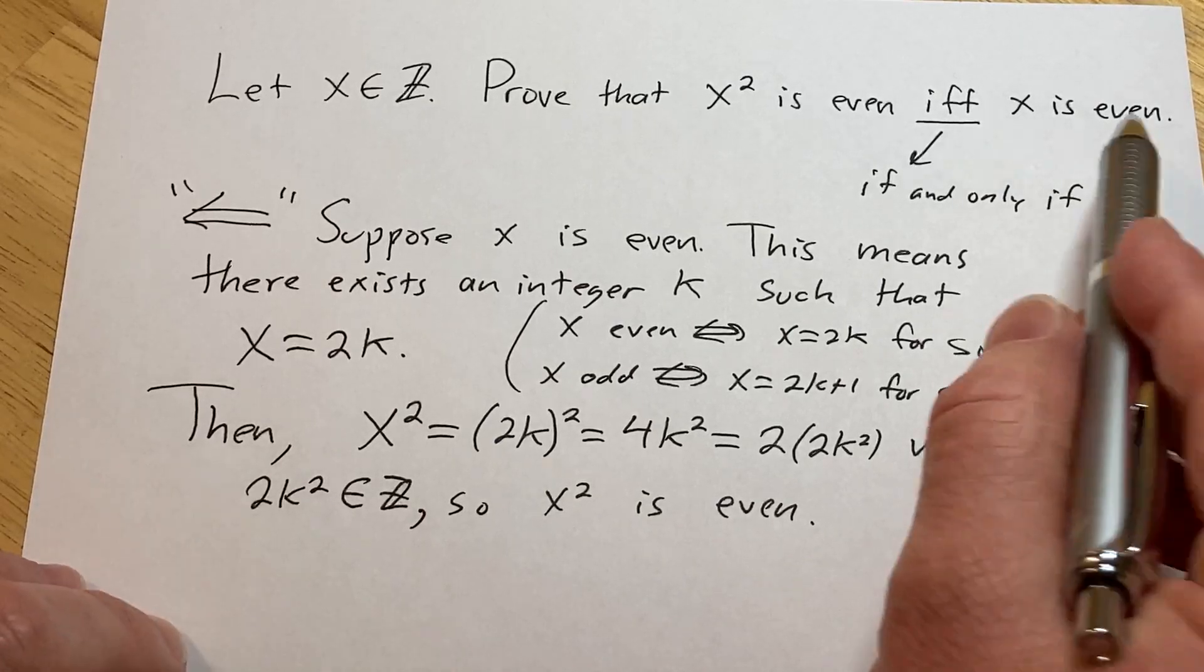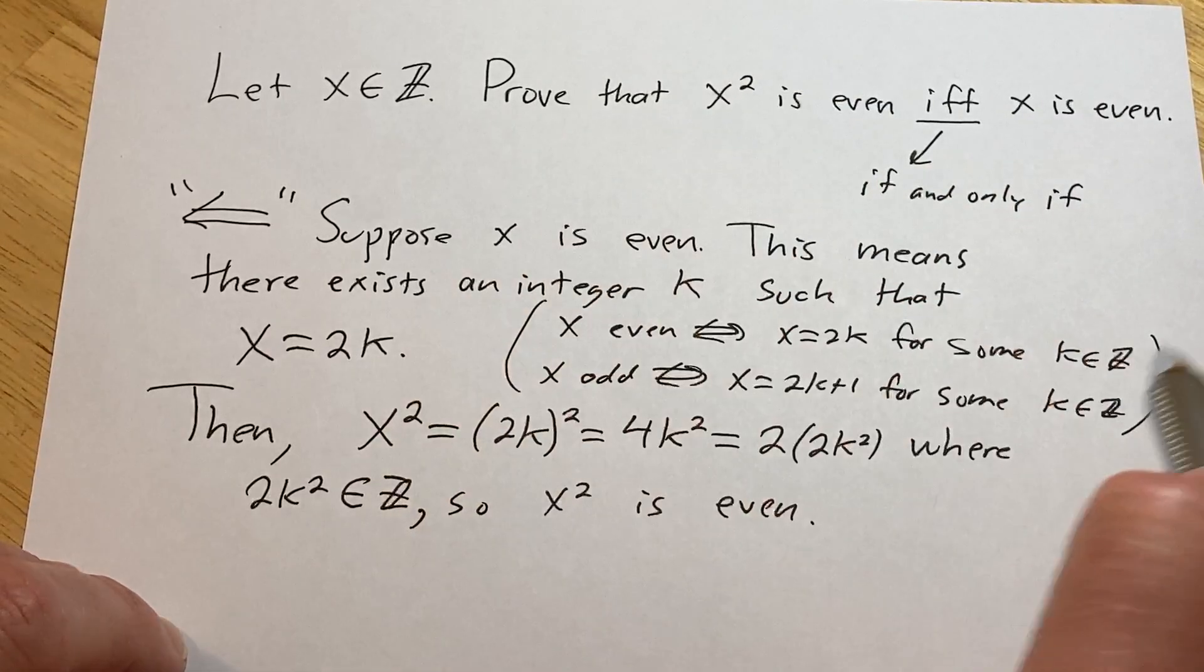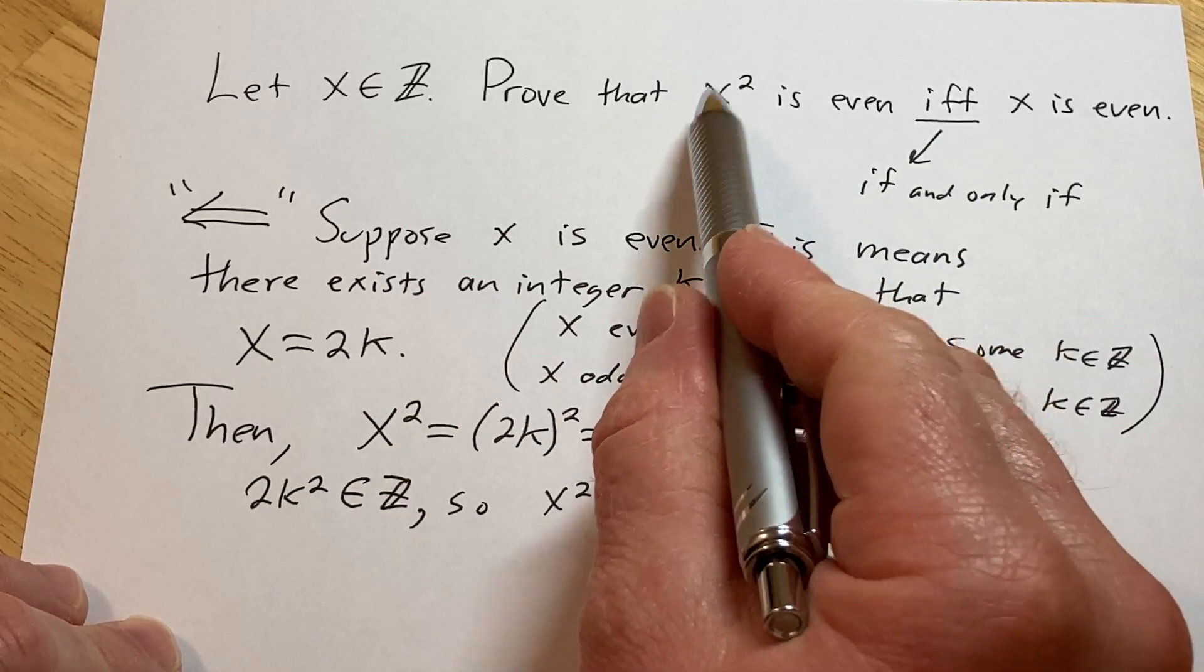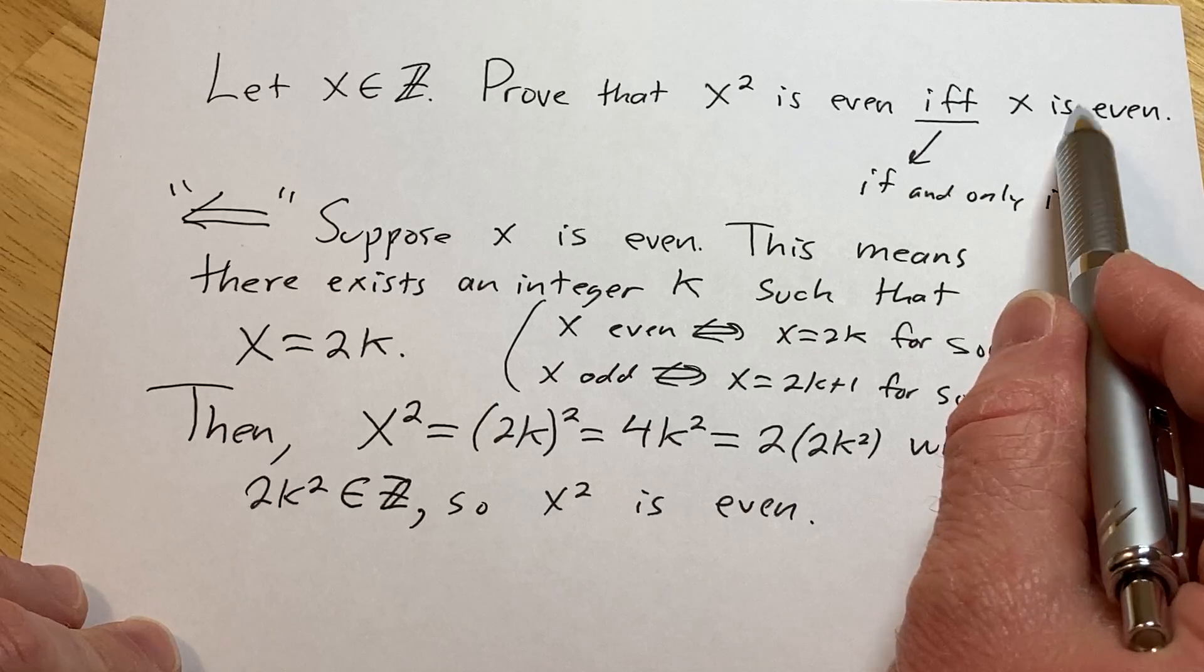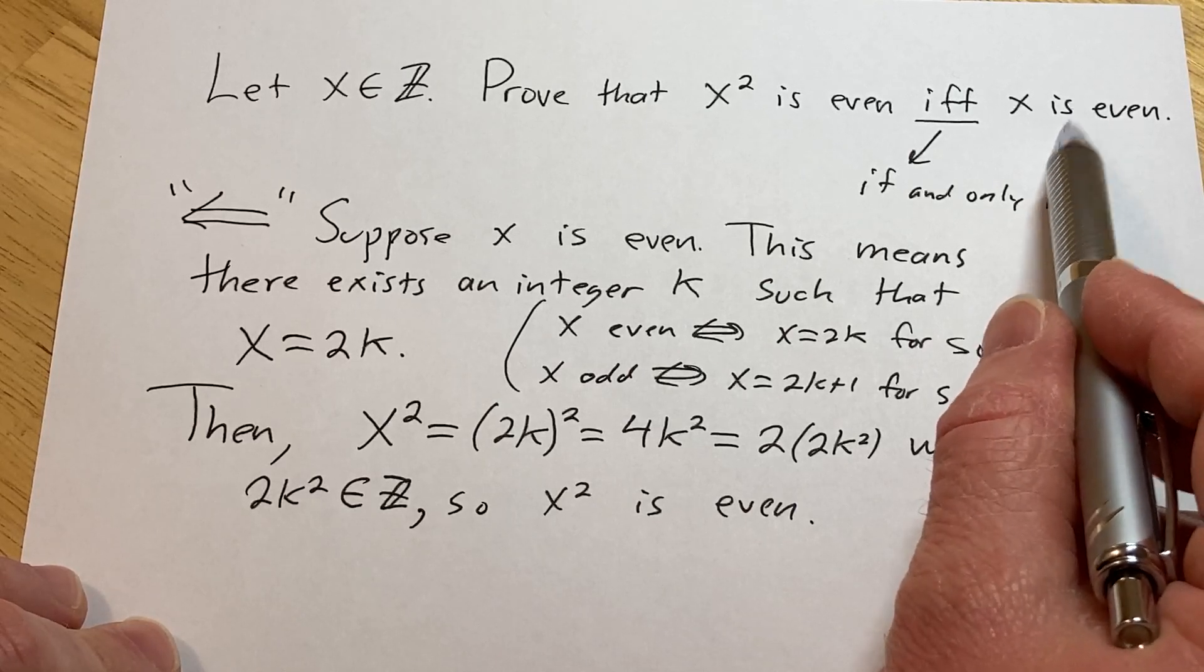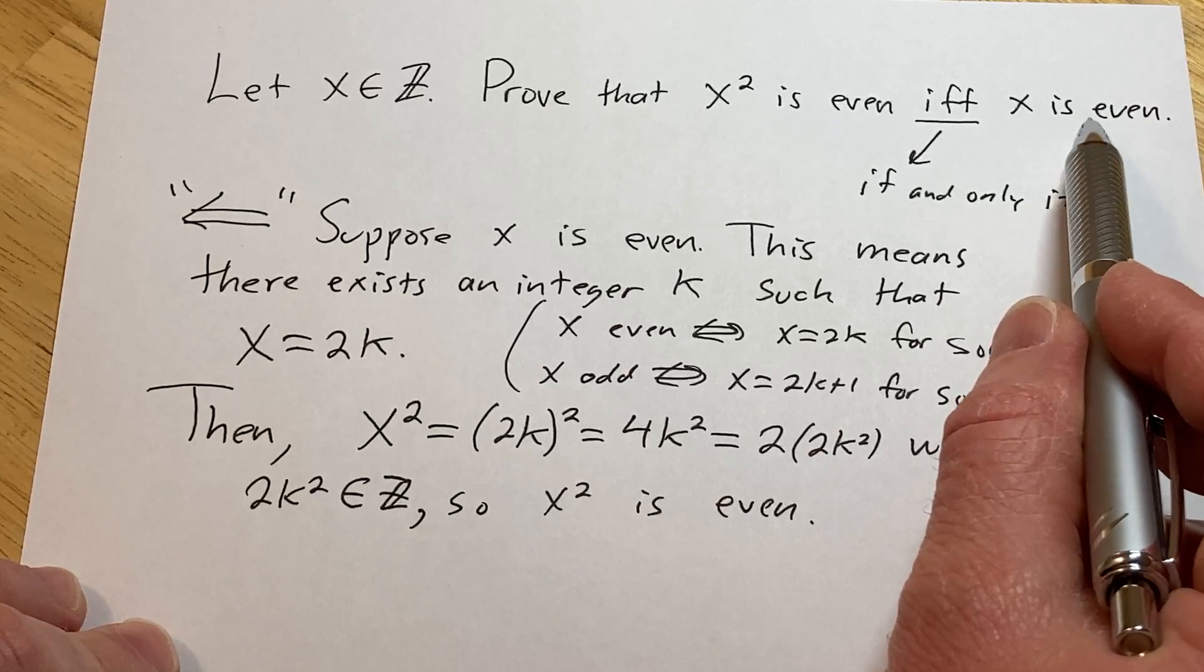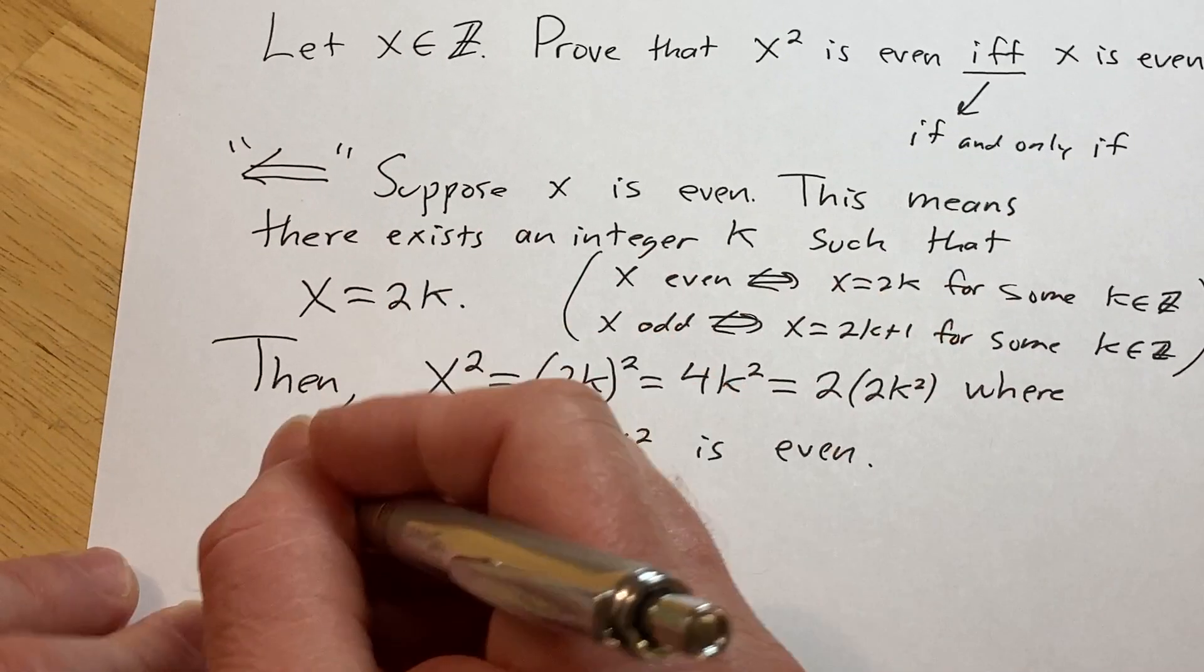All right, so we've shown one direction, we've shown that if x is even, then x squared is even, so now we have to show the other way. So we have to show that if x squared is even, then x is even. Instead of doing that, we're going to prove the contrapositive. We're going to show that if x is odd, then x squared is odd. So we're showing this direction.